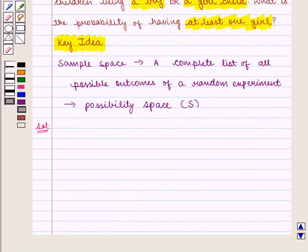So first, we list the elements of sample space and then find the probability. Here, let B denote the boy child and G denote the girl child.